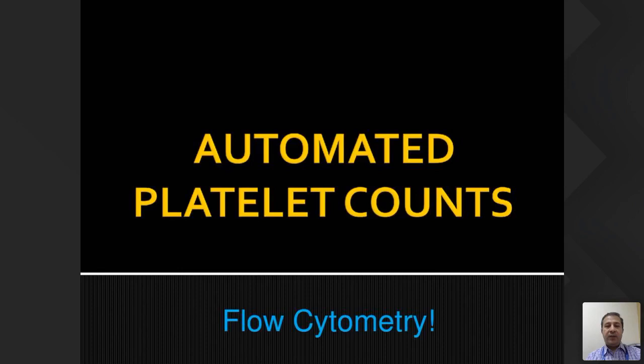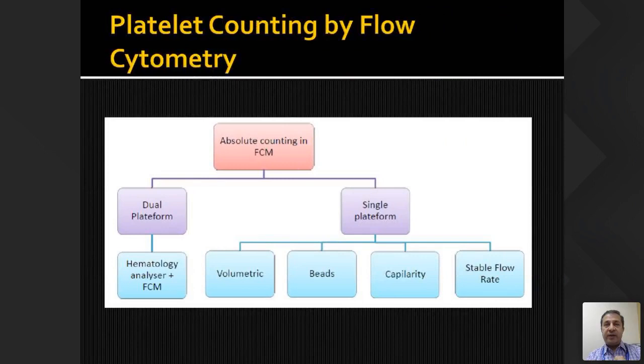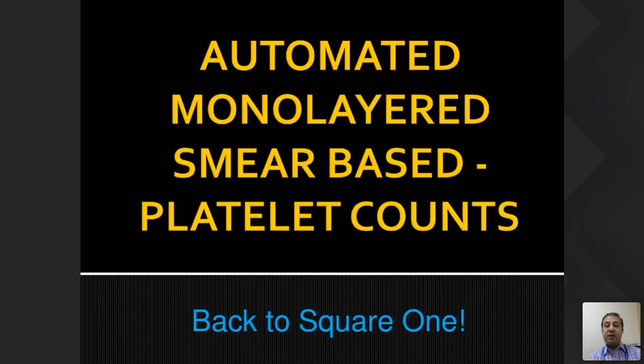Automated platelet counts by flow cytometry — the ICSH-standardized methodology — can be done by dual platform (hematology analyzer plus flow cytometer) or single platform. The single platform methodology uses the red cell versus platelet ratio to get counts and is considered the standard.